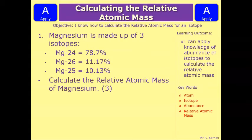Okay let's have a look at a question then. So this one's a little bit tougher. Let's see if you can have a go at it. It says magnesium is made up of three different isotopes. Mg-24 which has an abundance of 78.7%, Mg-26 which has an abundance of 11.17%, Mg-25 which has an abundance of 10.13%. Calculate the relative atomic mass of magnesium.